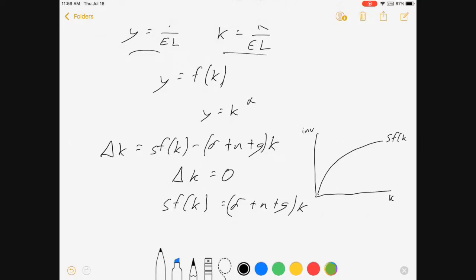And there's this curve, which is delta plus n plus g all times k. There's your steady state. None of that stuff's changed. But something interesting has changed.